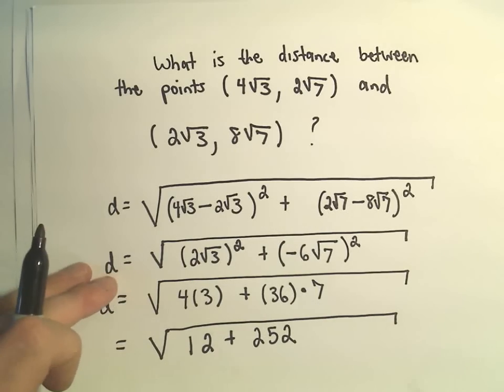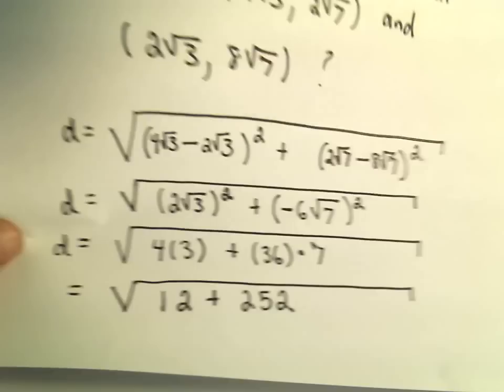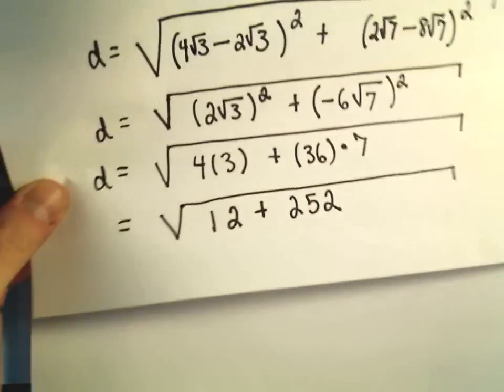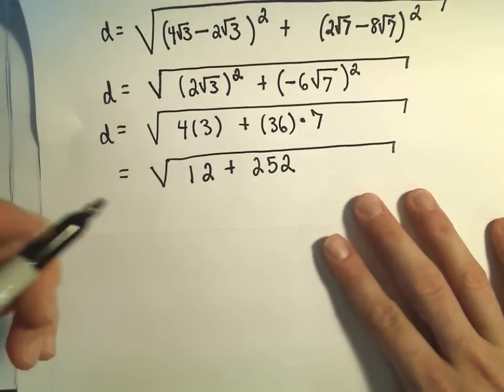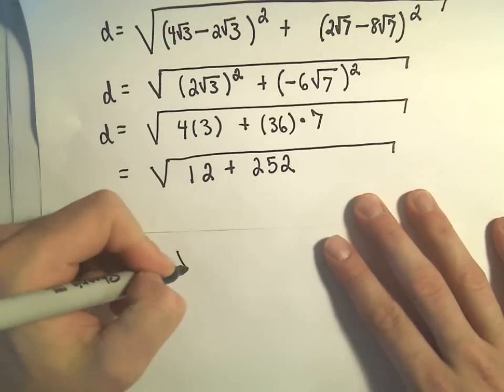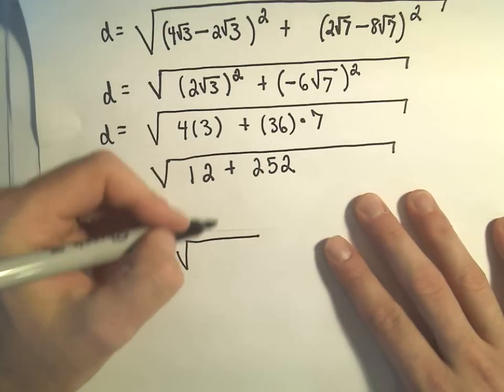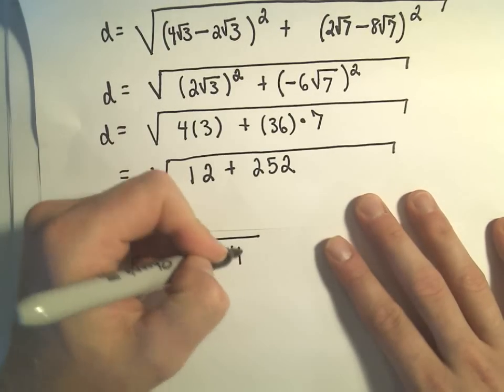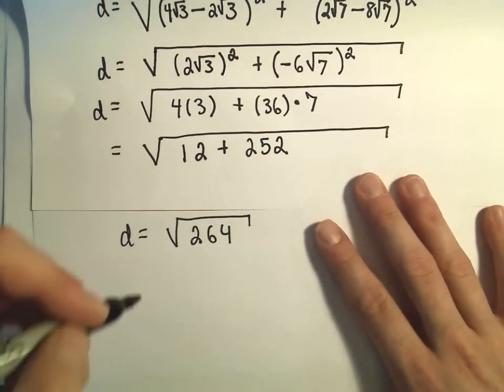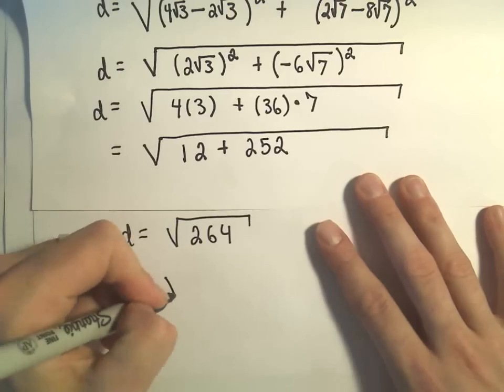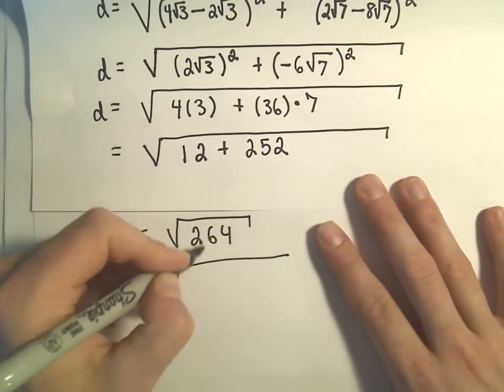At this point, I would combine these values. So we have the distance is just going to be the square root of, what is that, 264? You could plug this into a calculator, simplify it down. Suppose we didn't have a calculator. This is even, so I could certainly write it.